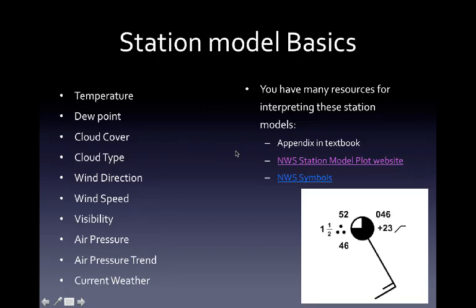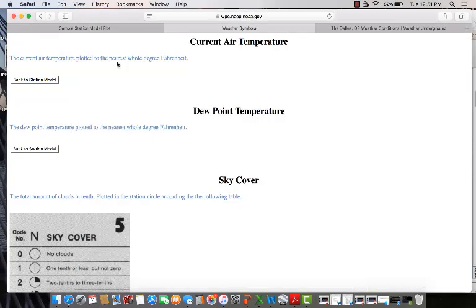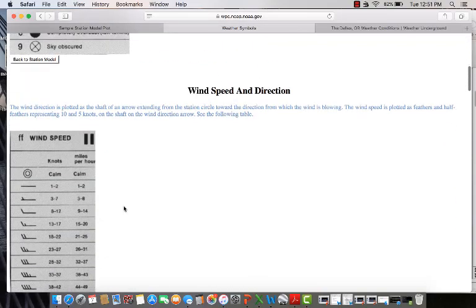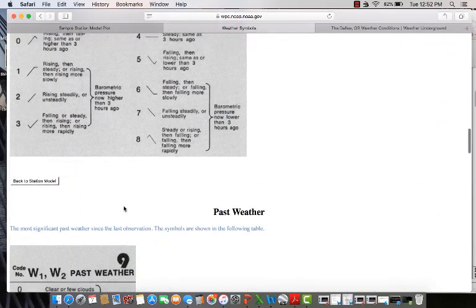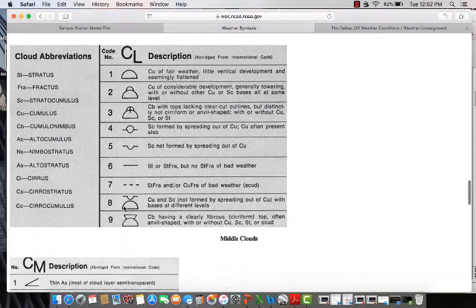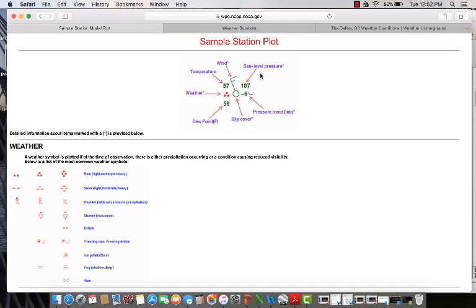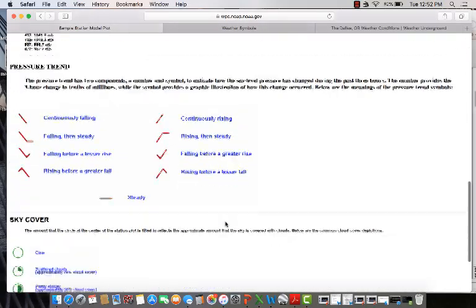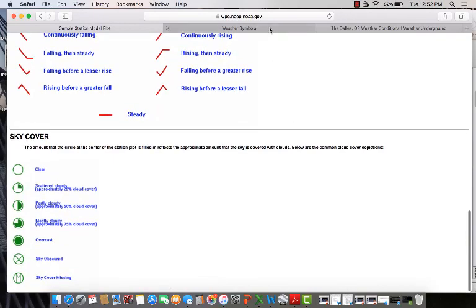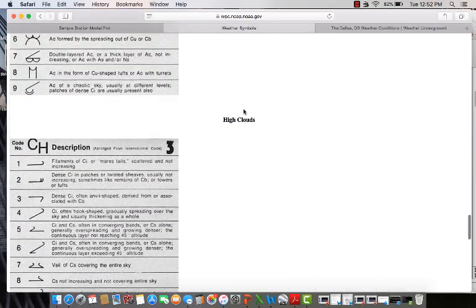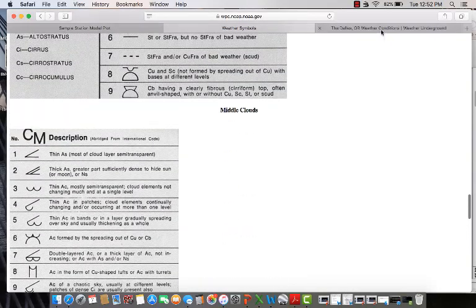Some websites that will be helpful to use are these two I have linked in this video. They're also linked in the course website. The weather symbols link tells you what each item means, also some keys showing you what each symbol means. You also have the other website, which gives you a little tutorial of what each element refers to, and then a little blurb at the bottom with some of the symbols for each. The weather symbols website has a bit more information, especially when it comes to the different types of clouds.